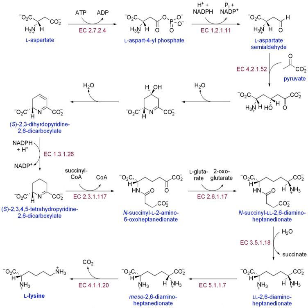The biosynthesis of nucleotides involves enzyme-catalyzed reactions that convert substrates into more complex products. Nucleotides are the building blocks of DNA and RNA. They are composed of a five-membered ring formed from ribose sugar in RNA, and deoxyribose sugar in DNA. These sugars are linked to a purine or pyrimidine base with a glycosidic bond and a phosphate group at the 5' position of the sugar.